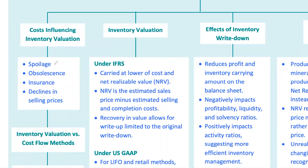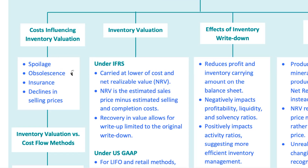Spoilage — think about a grocery store that has to toss out expired milk. Spoilage is when inventory becomes unusable due to damage or expiration, and this can lead to a reduction in the value of inventory on the balance sheet. Obsolescence is when inventory becomes outdated. Imagine a tech company still holding last year's smartphone models — those devices are now less valuable because newer models have hit the market, so the company might need to write down their value.